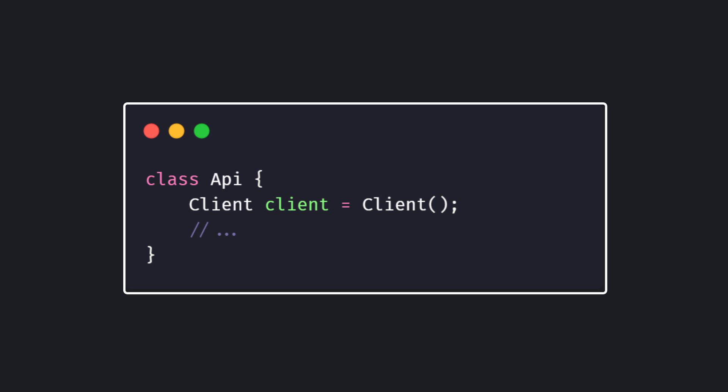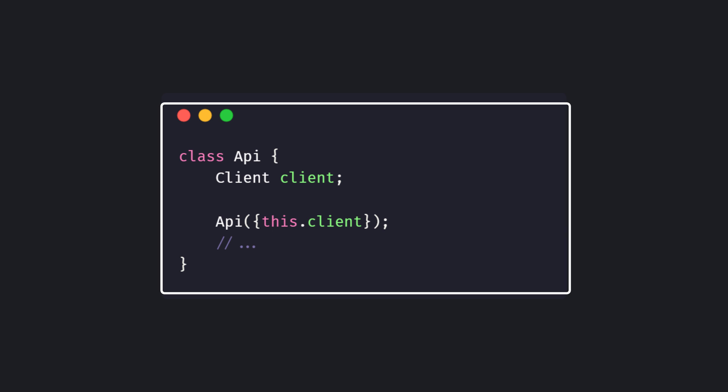This API class contains the code necessary to communicate with the joke API used in the app. The network calls made to the joke API are handled by the Client class from the HTTP package. If you pay attention, the API class is dependent on the Client class, and the most basic way to inject this dependency would be to pass it through the constructor.